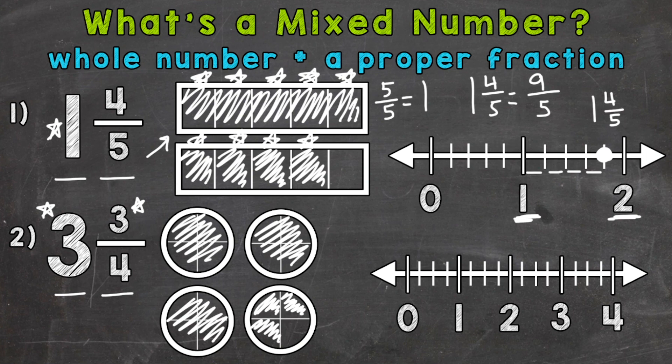Over to the number line, where we need to start with the three wholes — three wholes is right here — and we need to go three fourths. So this would be one fourth, two fourths, and three fourths. We would land right here, and that represents three and three fourths.